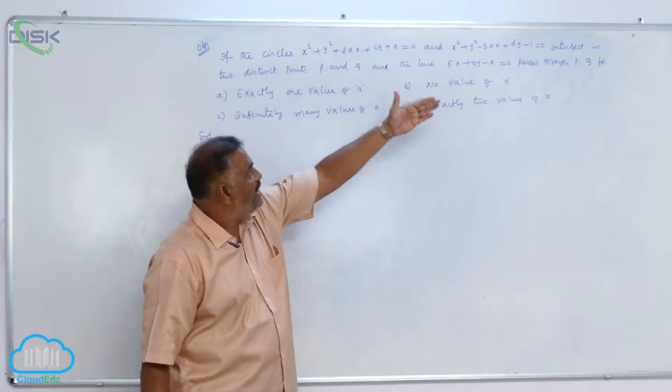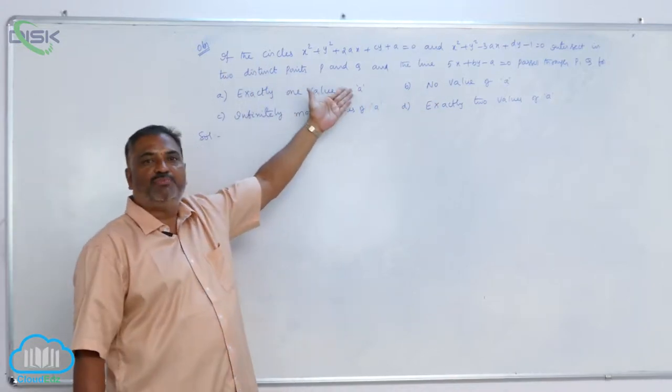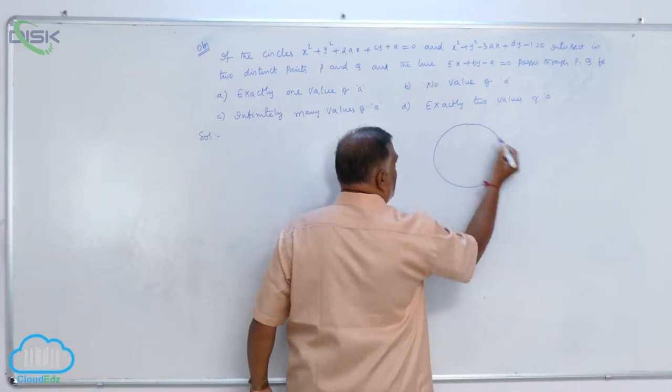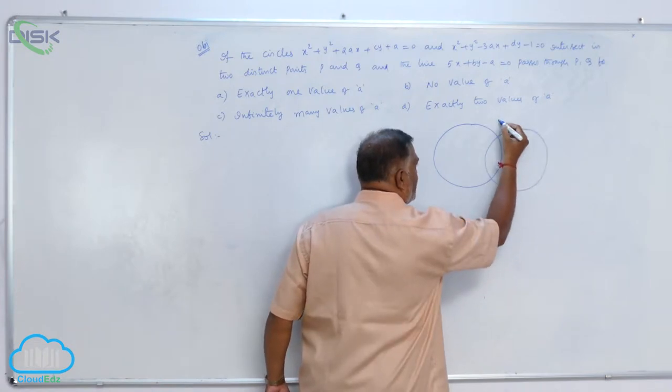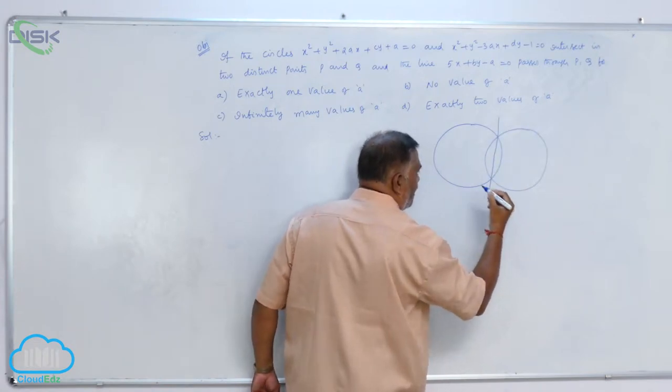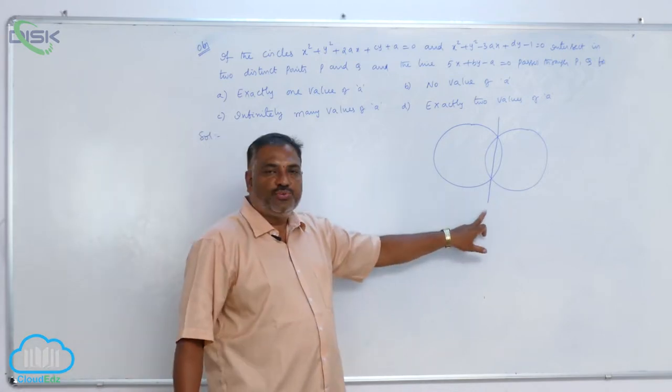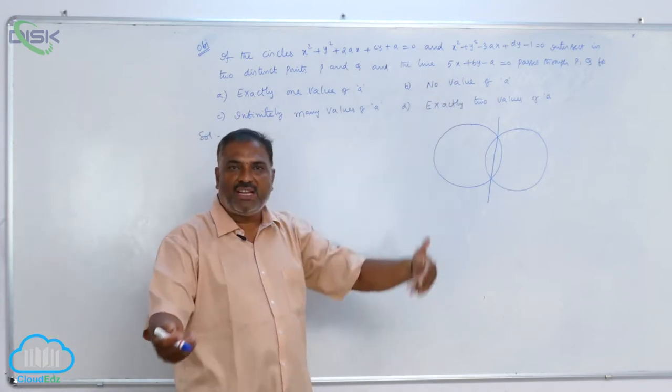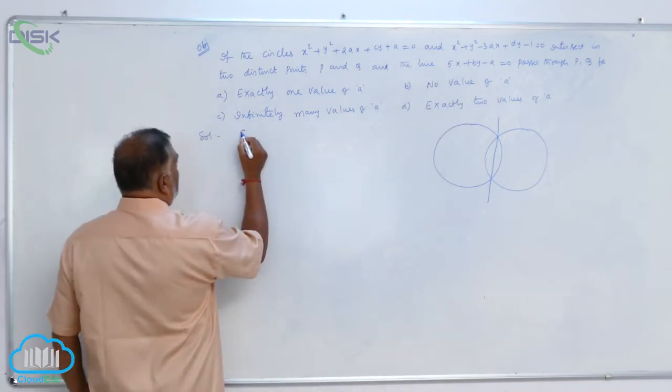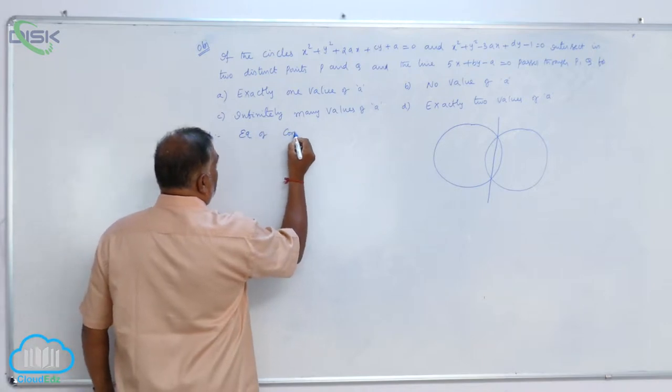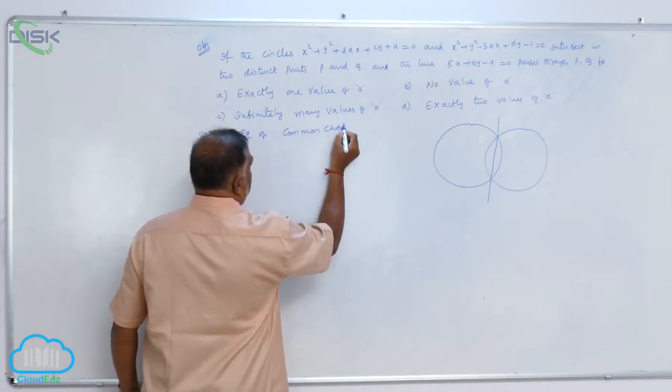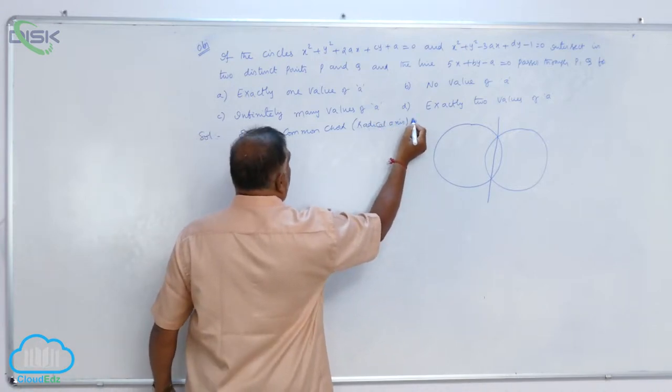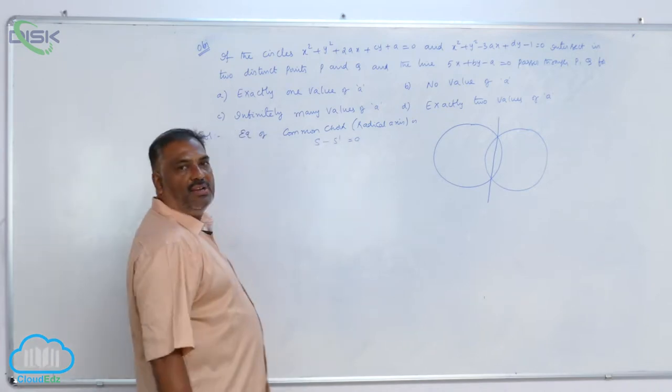If two circles intersect in two distinct points P and Q, observe that when two circles are intersecting like this, there definitely exists a common chord. The common chord of the two circles is nothing but the radical axis. When you are given two circles, immediately find out the radical axis. The equation of the common chord, for our understanding purpose, is nothing but the radical axis: S minus S' equal to zero.